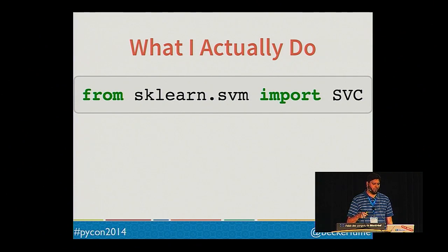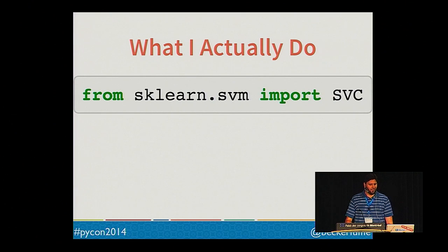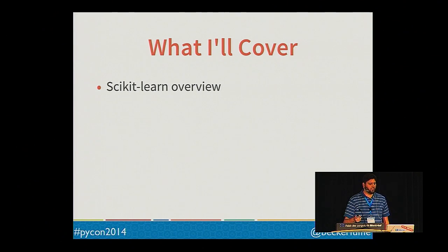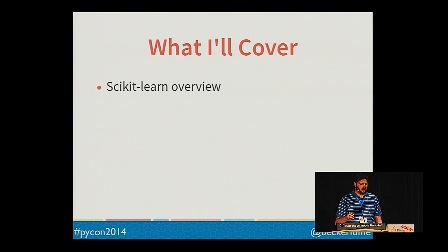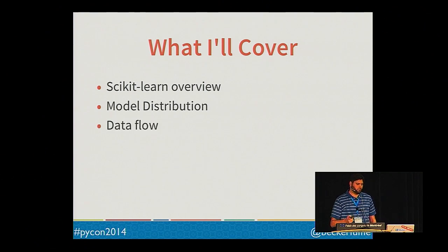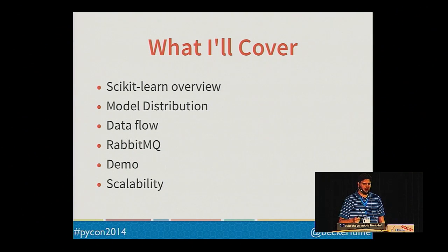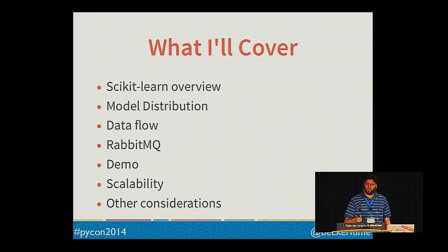While I'll cover some math in this talk, I'll mainly be keeping things high level, because I'm not a math genius. This talk will cover the logistics behind utilizing a trained scikit-learn model in a real-life production environment. I'll start with supervised machine learning and text processing, cover how to distribute your model, get new data to your model, introduce RabbitMQ, demonstrate a finished product, discuss scaling, and cover additional considerations for real-time production.